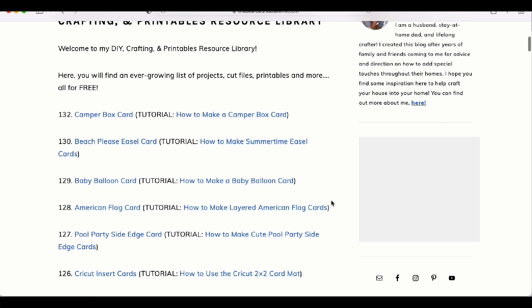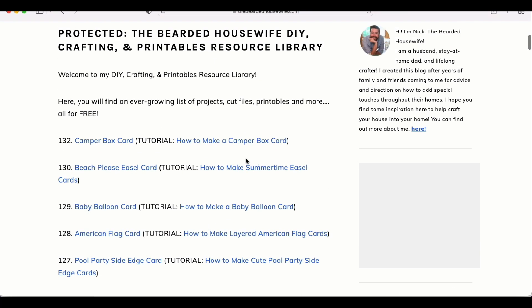And then you're brought to all the free files. For this card, you're going to want to look for number 132. That is the camper box card. Go ahead and click that hyperlink, download the file onto your computer, and then we're ready to open up Cricut Design Space.